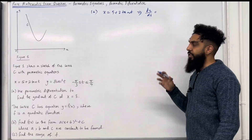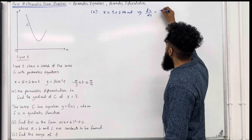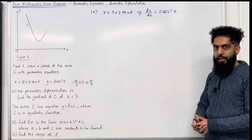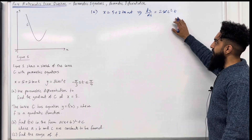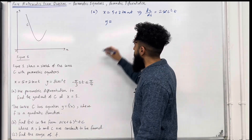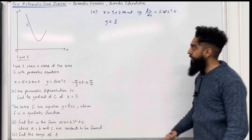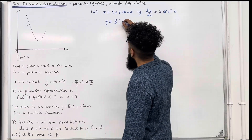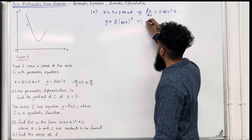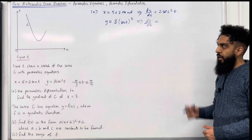If I differentiate the constant 5, that becomes 0. If I differentiate 2 tan t, that becomes 2 sec squared t, because tan t differentiates to sec squared t. So that is my dx over dt. My y equation is 8 sec squared t. I can rewrite it as 8 times (sec t) squared. I'm going to find dy over dt using the chain rule for differentiation.